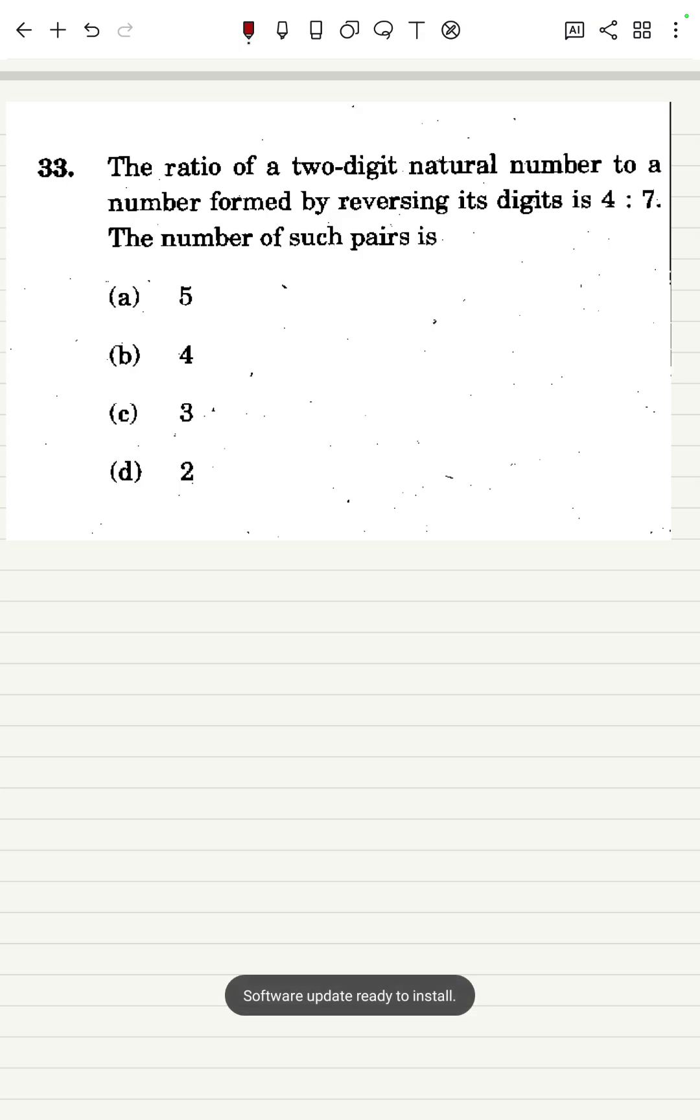Then you will easily solve such type of problems if asked in the CSAT examination. So let us start. The ratio of a two-digit natural number to a number formed by reversing its digits is 4 to 7. The number of such pairs...